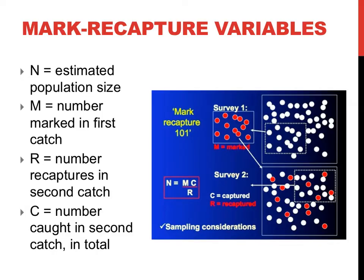If you caught 100 mice in a field and marked them all, and the next night you caught 112 more mice but only two had a mark, it would suggest that you caught a very small fraction of the mice and that there are many, many more in the field. If you caught 9 squirrels in a grove of trees and marked them all, and later caught 7, six of which were already marked, it would suggest that you caught most of the population in your first attempt and that the population size is quite small.